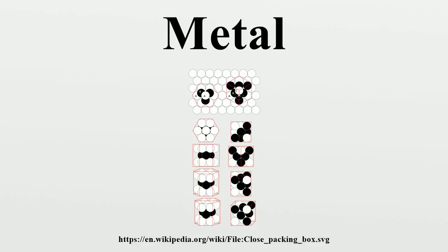When considering the electronic band structure and binding energy of a metal, it is necessary to take into account the positive potential caused by the specific arrangement of the ion cores, which is periodic in crystals. The most important consequence of the periodic potential is the formation of a small band gap at the boundary of the Brillouin zone. Mathematically, the potential of the ion cores can be treated by various models, the simplest being the nearly free electron model.